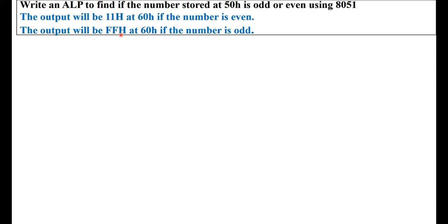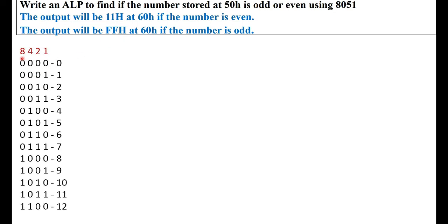First, let us understand how we determine whether the given number is even or odd. Consider a 4-bit number with positional weights 8, 4, 2, 1. If we carefully observe the even numbers 0, 2, 4, 6, 8, 10, 12 and so on, we can understand that the least significant bit of all even numbers is always 0, because all positional weights are even numbers except the least significant bit. So when this least significant bit is 0, we don't have the odd weight adding to the value — it is definitely going to be an even number.